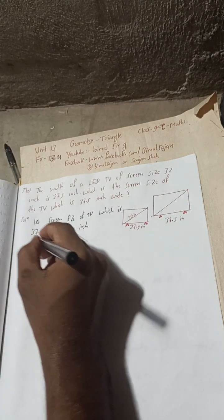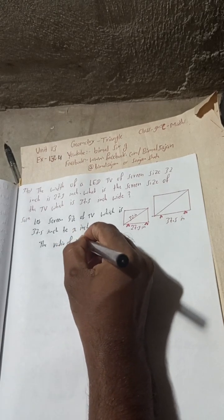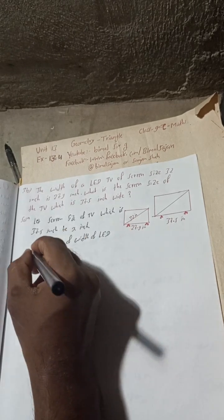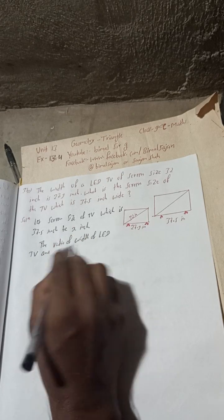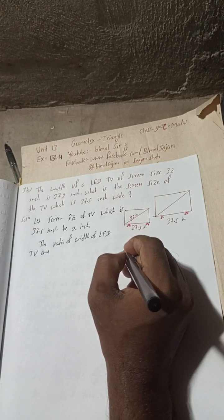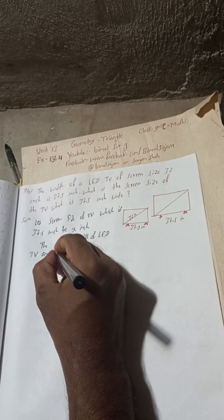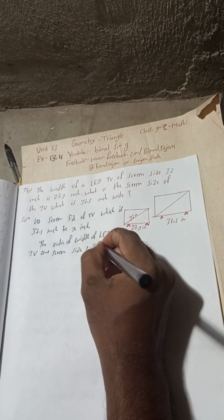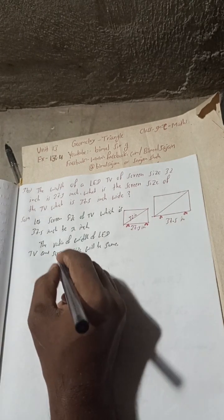Now you can write: the ratio of width of LED TV and screen size will be same or proportional. So the ratio of width to screen size will be the same.